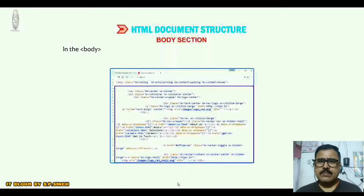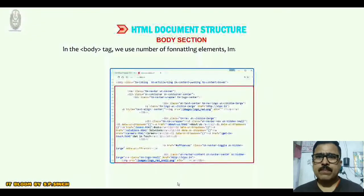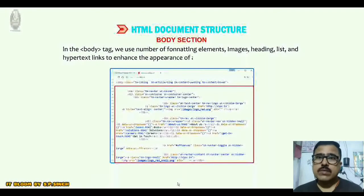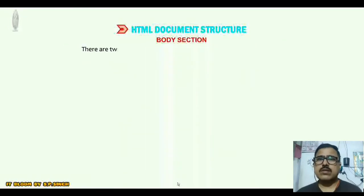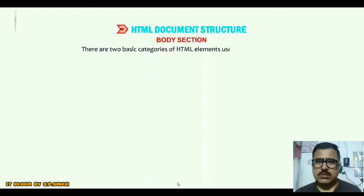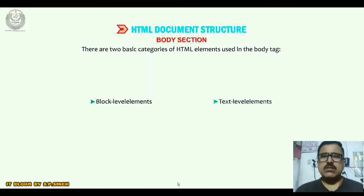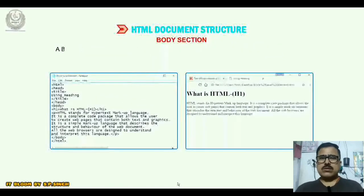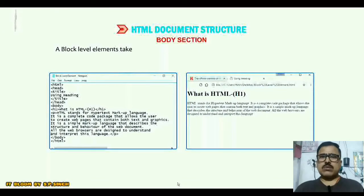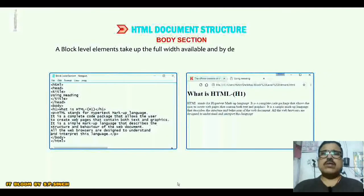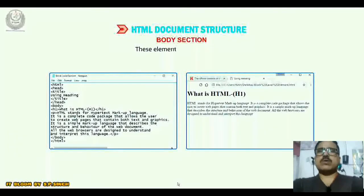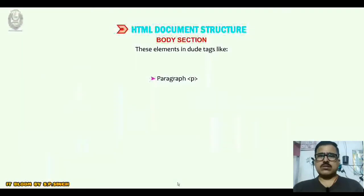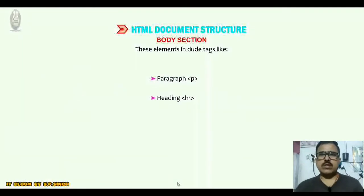The body tag contains the contents of your document which get displayed on the web page in your browser window. In the body tag, we use a number of formatting elements — images, headings, lists, and hypertext links — to enhance the appearance of a web page. There are two basic categories of HTML elements used in the body tag: block-level elements and text-level elements. A block-level element takes up the full width available and by default begins on a new line. These elements include tags like paragraph <p>, heading <h1>, and horizontal rule.